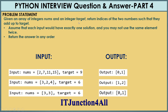Given an array of integers nums and an integer target, return indices of two numbers such that they add up to the target. In the first example, nums equals 2, 7, 11, 15 and the target is 9. If you add the first and second numbers, the first number's index is 0 and the second number's index is 1. So 2 plus 7 equals 9 and the output is 0 and 1 because indices start from 0.